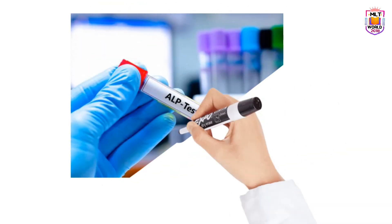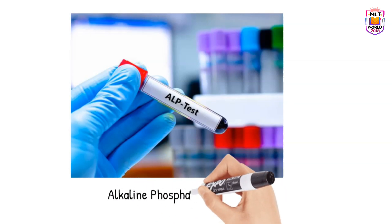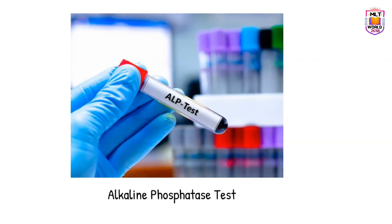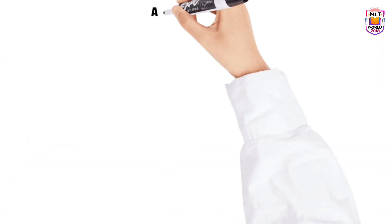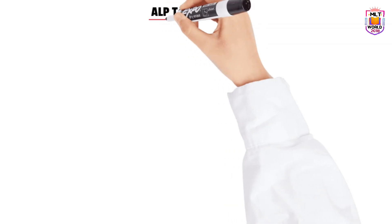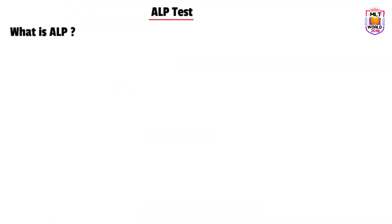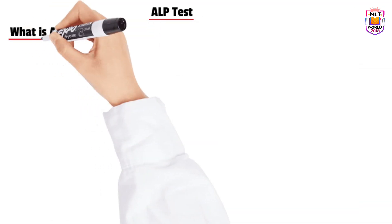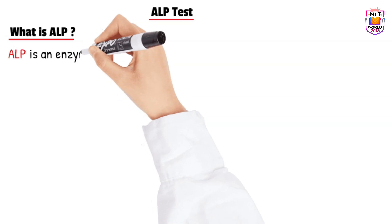Welcome back to MLT World channel. Today, in this video, I am going to share information related to the ALP test. ALP stands for alkaline phosphatase. Before starting this test, first of all we have to know what ALP is — what alkaline phosphatase is. Any word that ends in '-ase' means it is an enzyme.